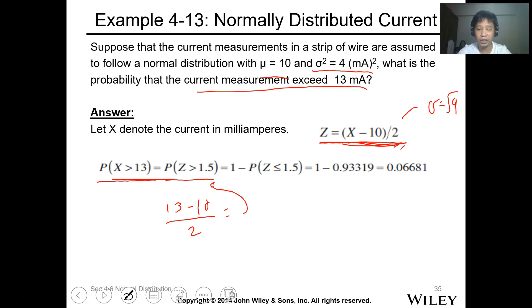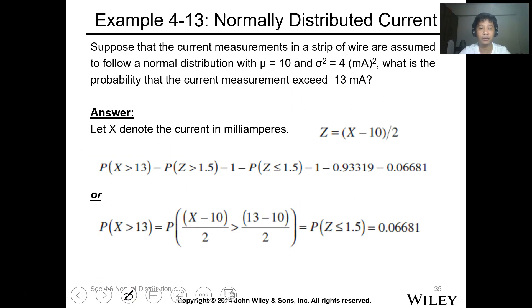So if you calculate on the calculator, stat mode, shift 1, distribution. So since this is greater than, you can use r. So r of 1.5. So the value is 0.06807. The approach here uses subtraction, making it less than, because we're using tabulation. So if you use the table, you'll get 0.93319. That's the value using calculator or you can use your table.